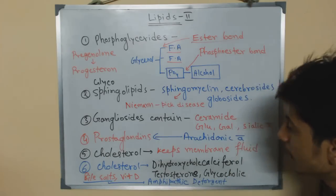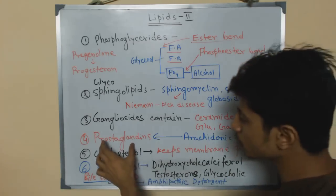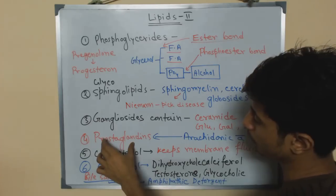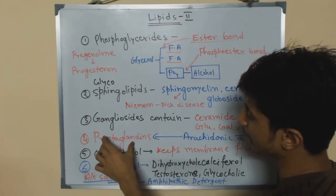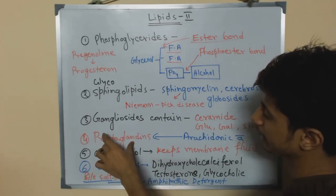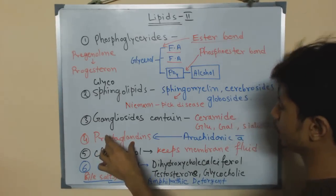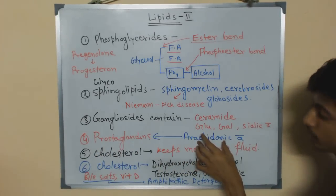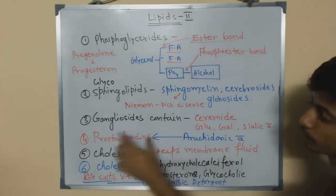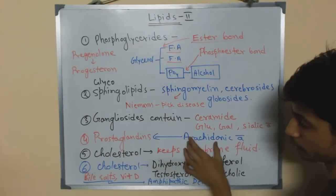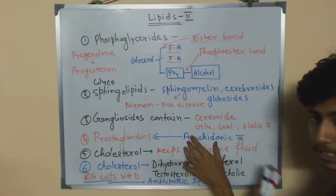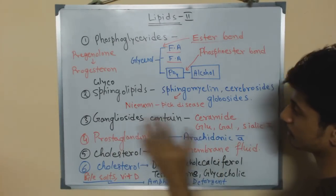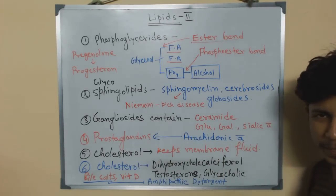Prostaglandin is a very important lipid component, and it is produced from arachidonic acid. So the precursor for prostaglandin is arachidonic acid.